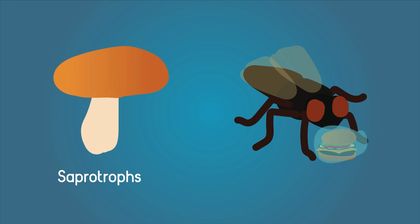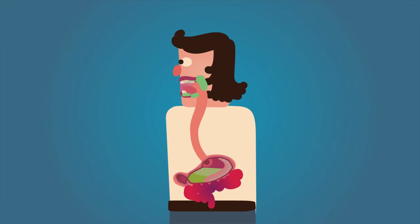House flies do a similar process where they secrete a solvent onto the food and then suck up the nutrients. Imagine spitting on your burger until it's just a seed and then eating it. Yuck! Anyway, let's get back to humans.